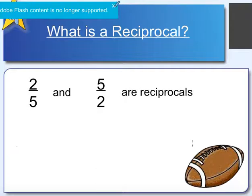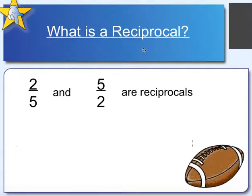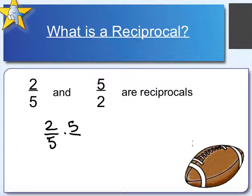When we are dividing fractions, we need to use the idea of a reciprocal. 2 fifths and 5 halves are reciprocals — basically, we take 2 fifths and switch the numerator and denominator. When we multiply a number and its reciprocal together, we will always get 1.